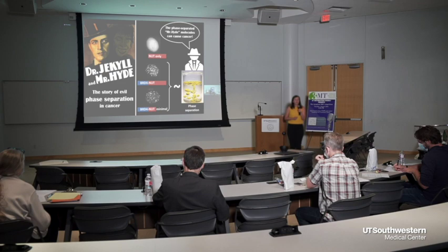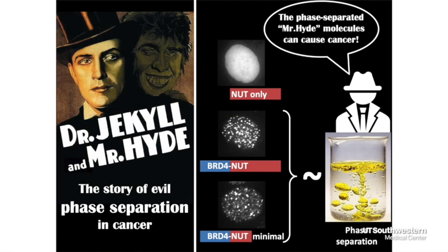While NUT carcinoma is still very poorly understood, we know that the Dr. Jekyll here is a protein called NUT, shown in my slide as this orange-red bar. This protein is normally found only in male testes, but in NUT carcinoma it gets fused with another protein called BRD4, shown in my slide as this blue bar — and in this way Dr. Jekyll becomes Mr. Hyde. The fusion protein is not specifically localized to testes anymore, and it can show up in any part of male or female body, and the two components of this fusion work together to cause cancerous cell transformation.